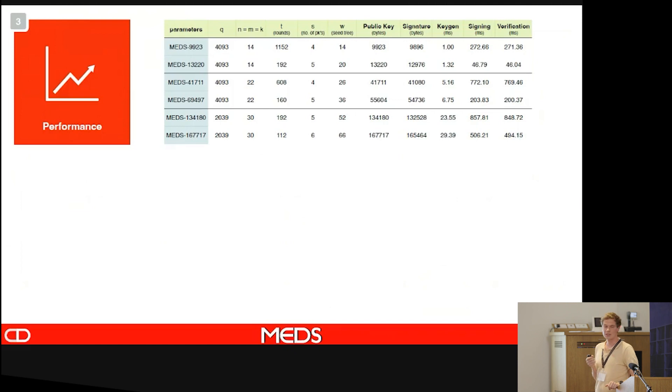Let's take a look at the performance. These are the parameter sets that we chose. Again, the small disclaimer, this is a reference implementation. We chose two parameter sets for each level. The first one has lower public key and signature sizes but with a large amount of rounds. For the second one, we chose a lower amount of rounds to have faster signing and verification, but then we also get large public key and signature sizes.